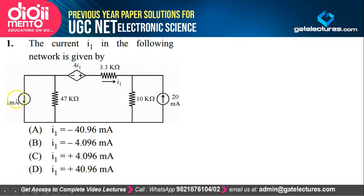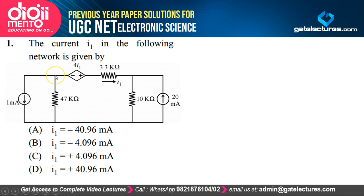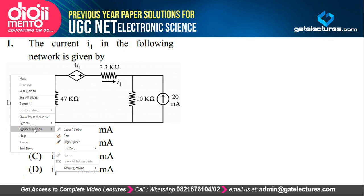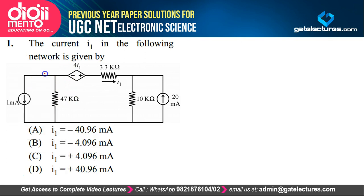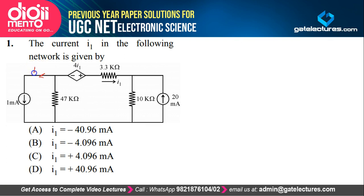Looking at the first question, they've given us a circuit in which there is an independent current source of 1 milliampere and a dependent voltage source — this depends on current I1 passing through this resistor of 3.3 kilohm — and they are asking for the value of the current I1. Applying nodal analysis: current that comes in has to go out. So 1 milliampere goes in this branch, I1 current goes in this branch, which means 1 plus I1 current flows through the 47 kilohm element.